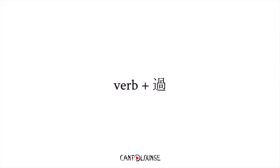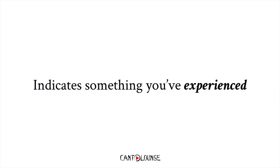The second aspect marker we're going to introduce today would be 過. 過 is different from 著. In the same way, you add 過 after the verb. You'll use this when you want to indicate something that you've experienced. If you ever grab a grammar text, 過 is usually indicated as the experiential aspect marker, which is very appropriately named.